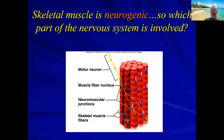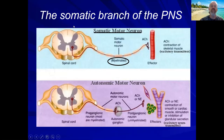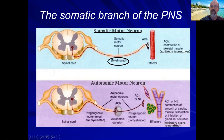Before we get into the mechanics of contraction, I want to elaborate on the nervous system's involvement. Skeletal muscle is absolutely 100% dependent on a nerve telling it what to do. If something happens to that nerve — as can occur with neurodegenerative diseases — the muscle not only won't contract but will atrophy. The part of the peripheral nervous system involved here is the somatic branch, which consists of myelinated axons that release acetylcholine at the muscle, binding to a nicotinic receptor.